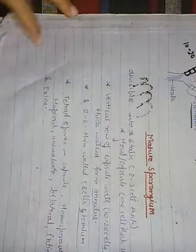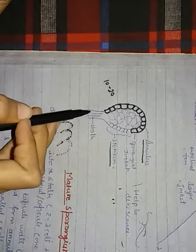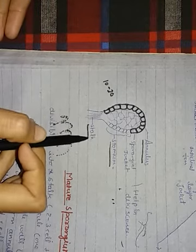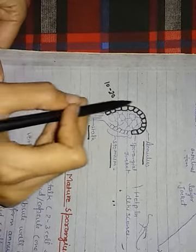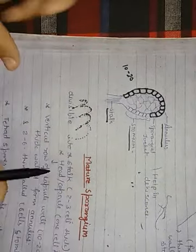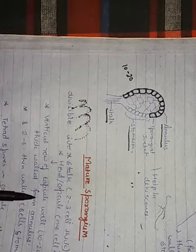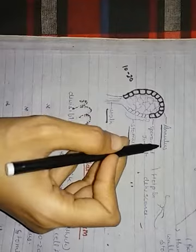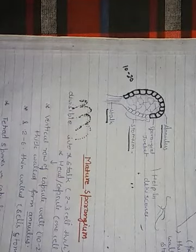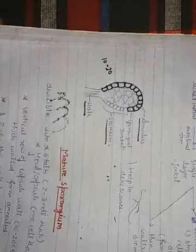If we talk about the mature sporangium, the structure is divided into two parts: the first is the stalk and the second is the head structure, which is called the capsule. The vertical rows of the capsule wall are a single layer, with 10 to 20 thick-walled annulus cells and the remaining cells called stomium.